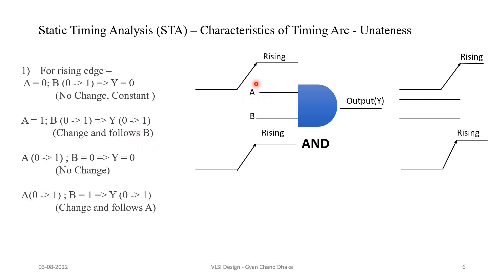Now let's see what happens whenever there is a rising transition happening at input A. We will assume two values of B. When B is 0 and there is a rising transition at A, there is no change in the output. But whenever B is 1 and the input transitions from 0 to 1, the output will also rise. So here the output will exactly follow A.